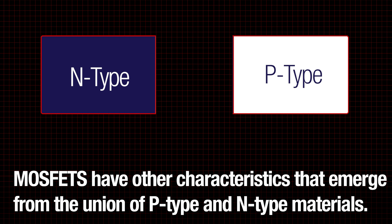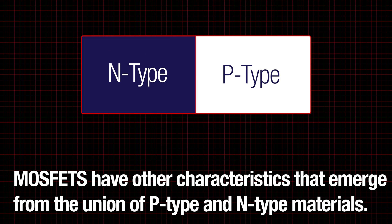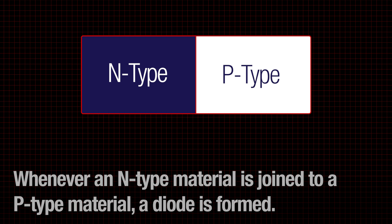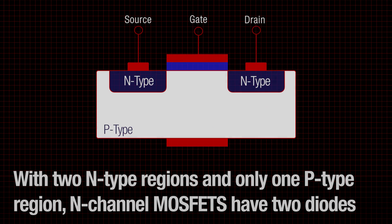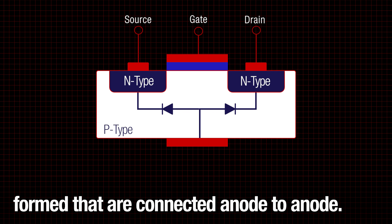MOSFETs have other characteristics that emerge from the union of p-type and n-type materials. Whenever an n-type material is joined to a p-type material, a diode is formed. With two n-type regions and only one p-type region, the n-channel MOSFETs have two diodes formed that are connected anode to anode.